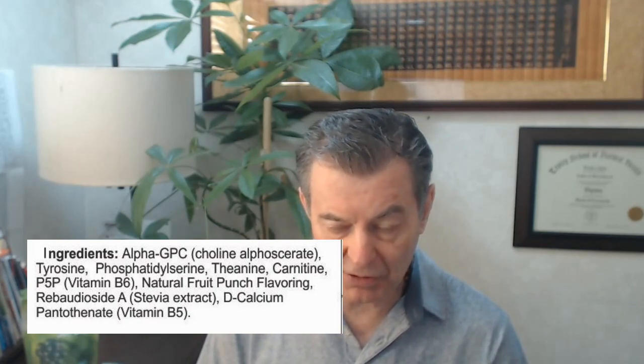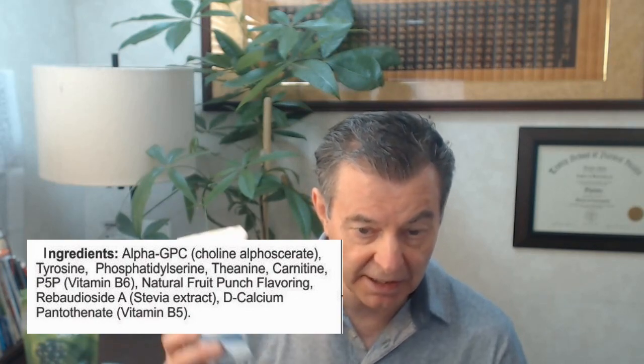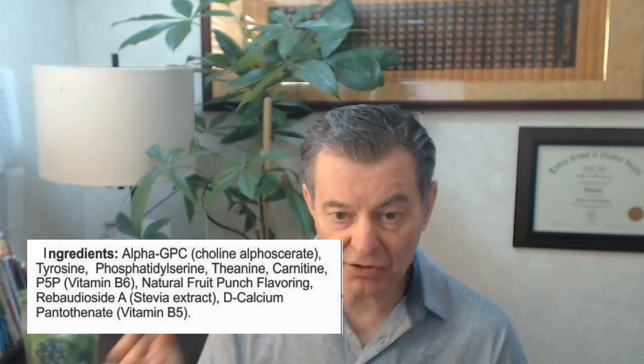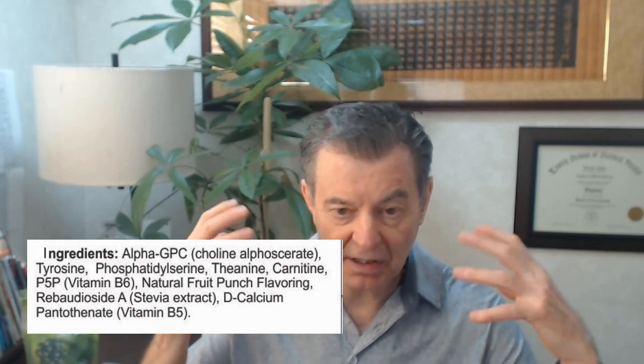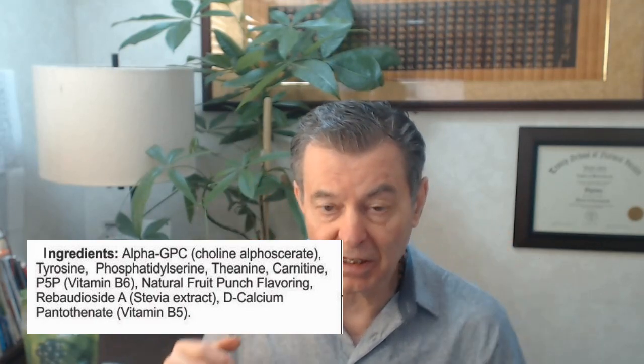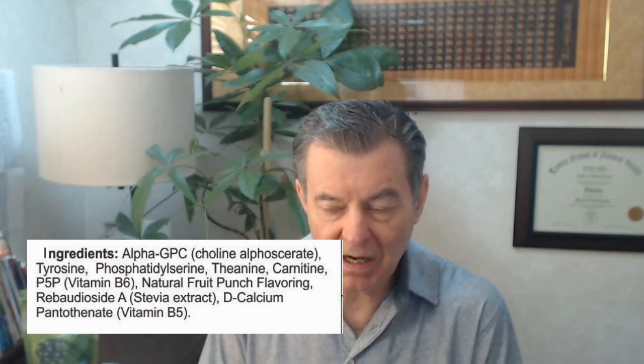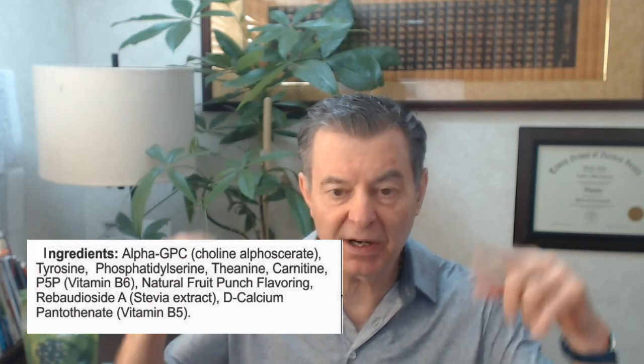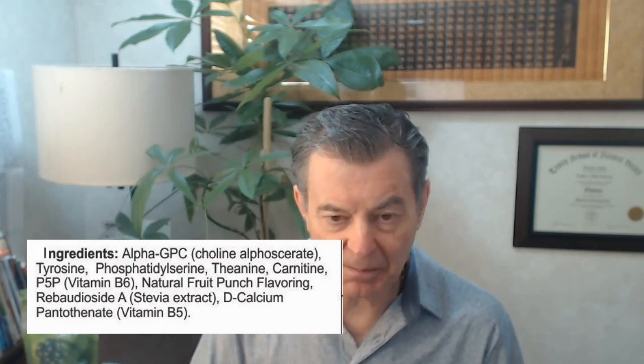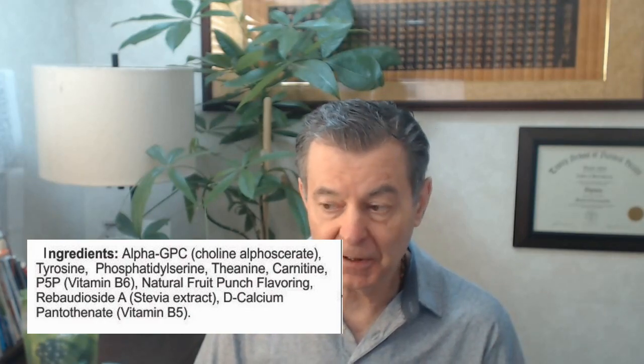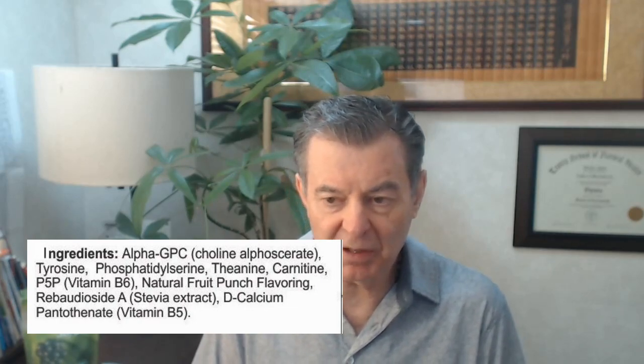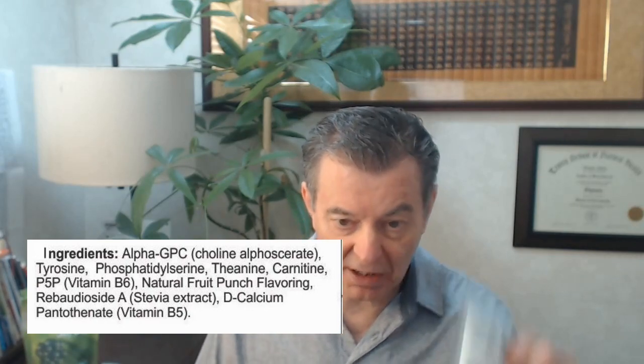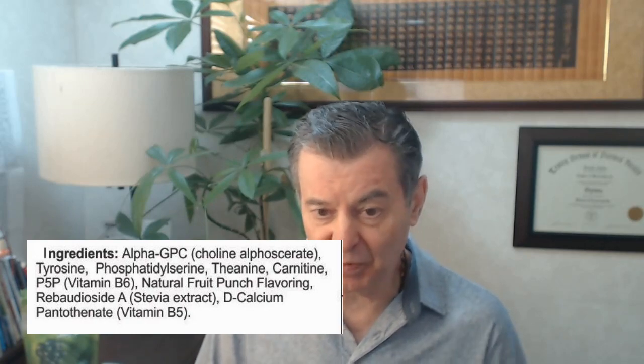And then I take Alpha-GPC. Okay. Phosphatidylserine in here. I also take, there's some amino acids in here. Theanine, tyrosine, and carnitine. Those are your brain amino acids. Those are the ones you really need for your brain. And then something called P5P. That's like converted B6, vitamin B6. That's the one that goes. So it's converted, meaning it's ready to go into your brain immediately. If you just put in vitamin B6, it takes hours and hours to get into your brain. So there's nothing wrong with it, but it's got to convert inside your body. So this is already ready to be used. And then B5 I take, that's in here as well. And that's it.